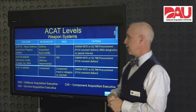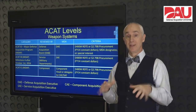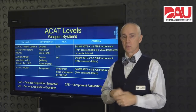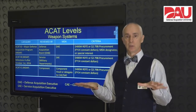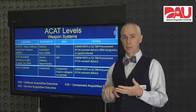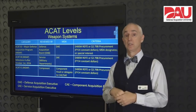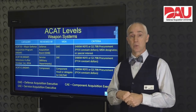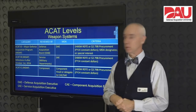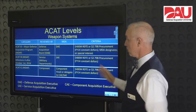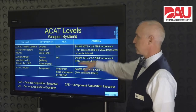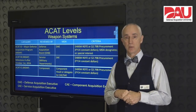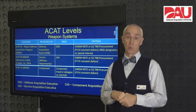Legacy-wise, there are lots of ACAT 1C programs where the defense acquisition executive delegated to the component or service. The services are your armed services — Army, Navy, Air Force, Marine Corps. The components are other agencies within the Department of Defense that have a component acquisition executive, like Special Operations Command. Basically, the same rules apply for an ACAT 1C as an ACAT 1B in terms of scrutiny level — your component or service acquisition executive is going to be the milestone decision authority for those programs.